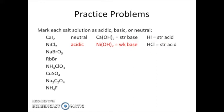The next one is sodium bromate. Bromate comes from bromic acid, which is not a strong acid — it's a weak acid. Sodium comes from sodium hydroxide, which is a strong base. So we have a weak acid and a strong base, and you probably guessed it: the strong base wins. When a strong base and a weak acid combine, we're going to end up with something that's basic. We'll explore why this happens a little bit later.